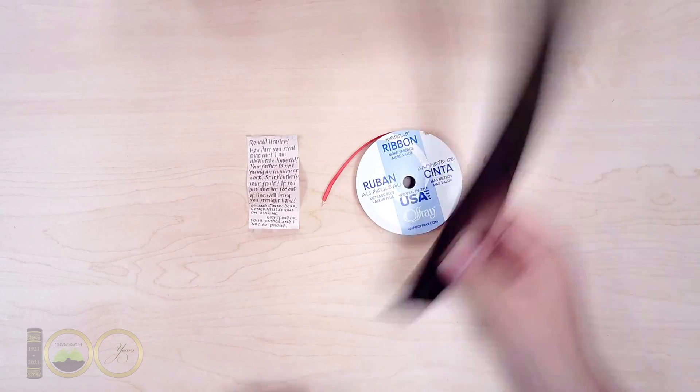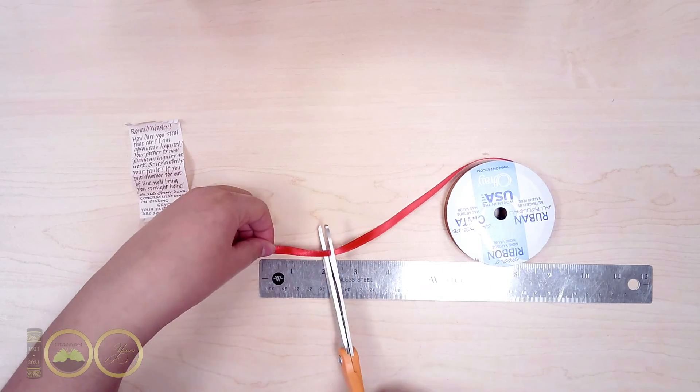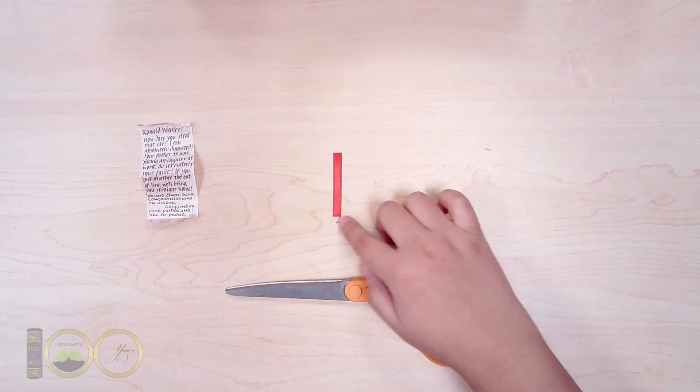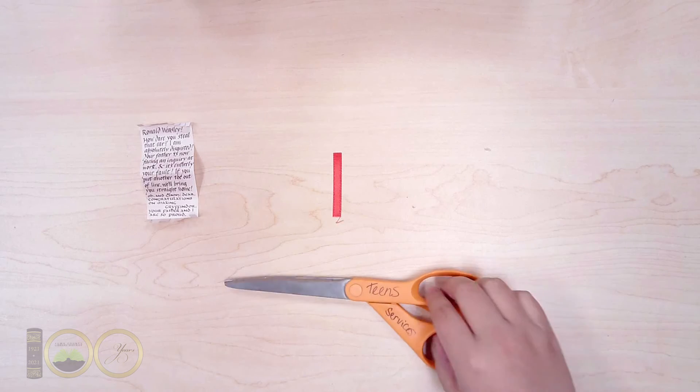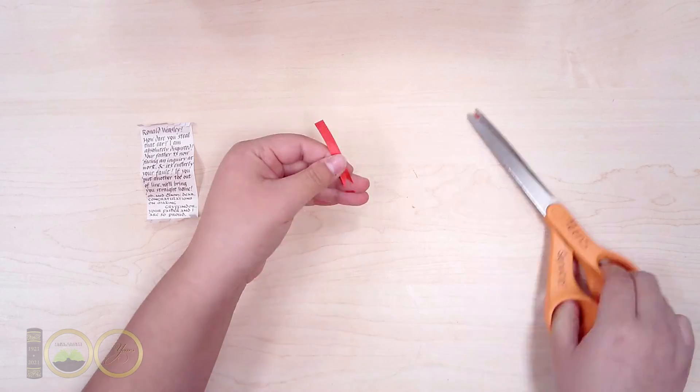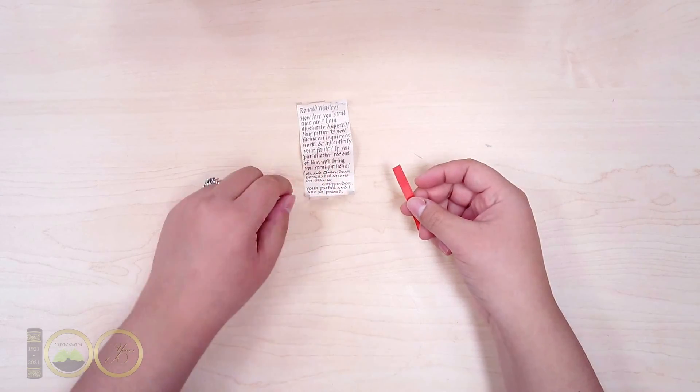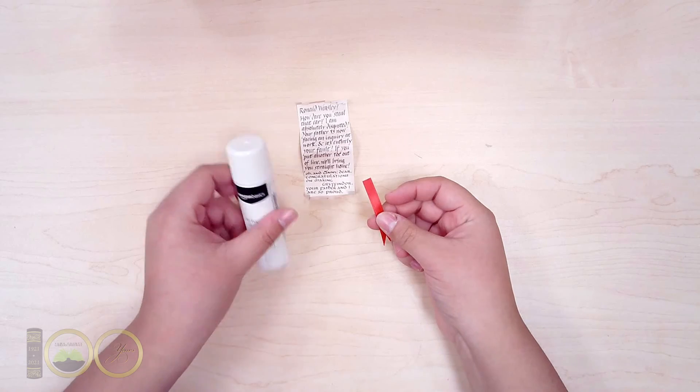Take the red ribbon and cut a two inch strip. Cut a small triangle out from one end of the ribbon. Glue the ribbon underneath the center wave of the paper to act as the howler's tongue.